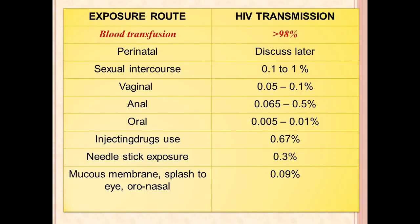Exposure route and transmission rates: Blood transmission has the highest rate at more than 98 percent. Sexual intercourse accounts for 0.1 to 1 percent overall; vaginal is 0.05–0.1%, anal is 0.065–0.5%, and oral is 0.005–0.01%. Injecting drug use is 0–67%, needle stick exposure is 0.3%, and mucous membrane or splash to eye/nasal route is approximately 0.09%.